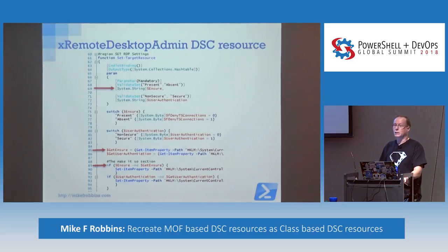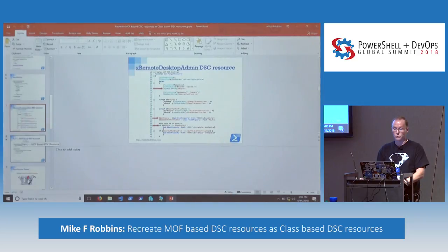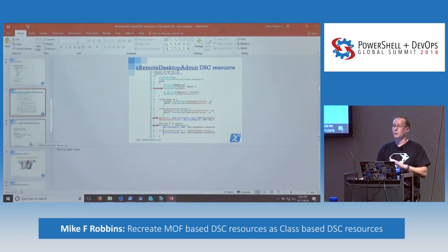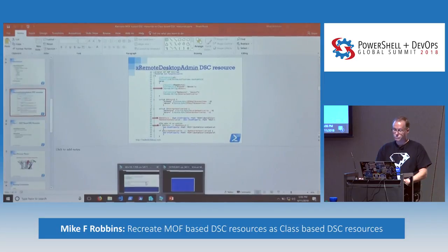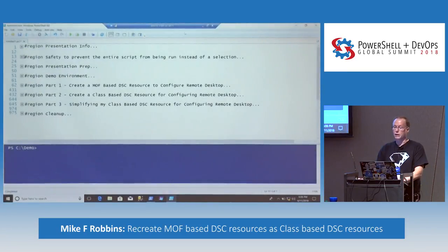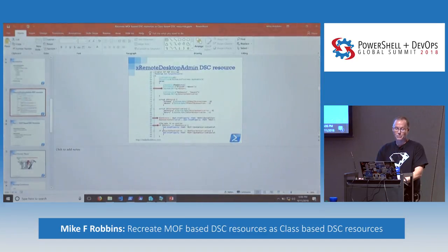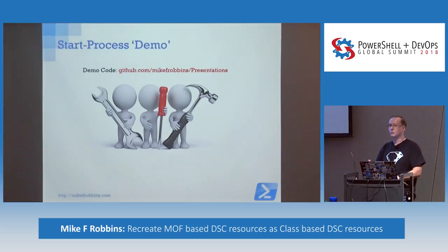Initially back in 2014 is when I found this problem, and that's when I designed a DSC resource — a MOF-based resource. So I'm going to show you how we did MOF-based resources in 2014 and how we're doing class-based resources today. All my code is already available on GitHub. I've actually been living dangerously today — I like doing things that Don Jones tells me not to do.